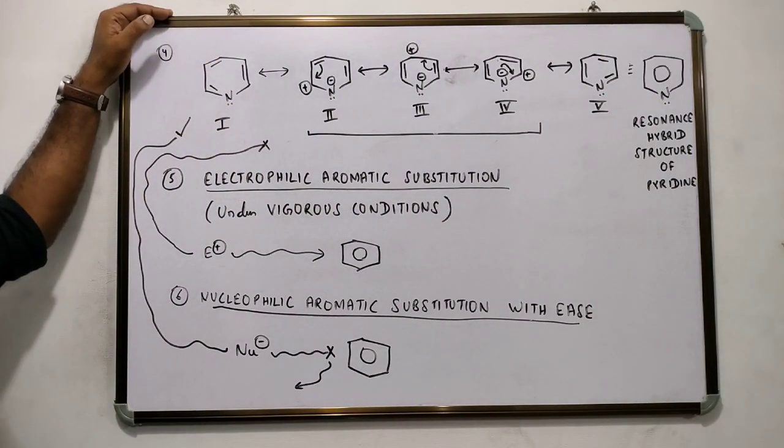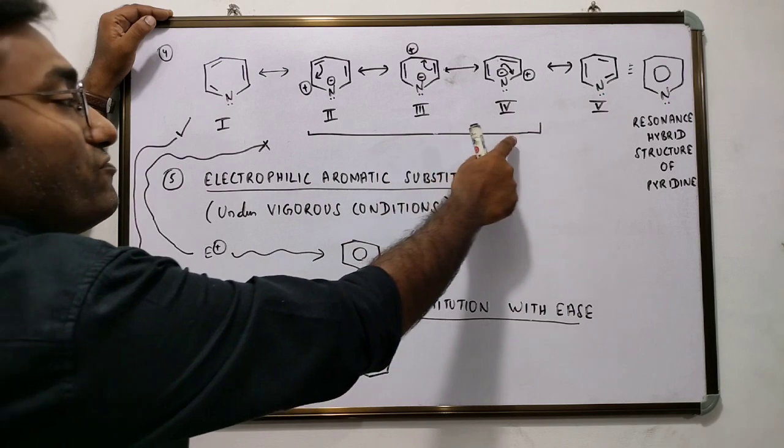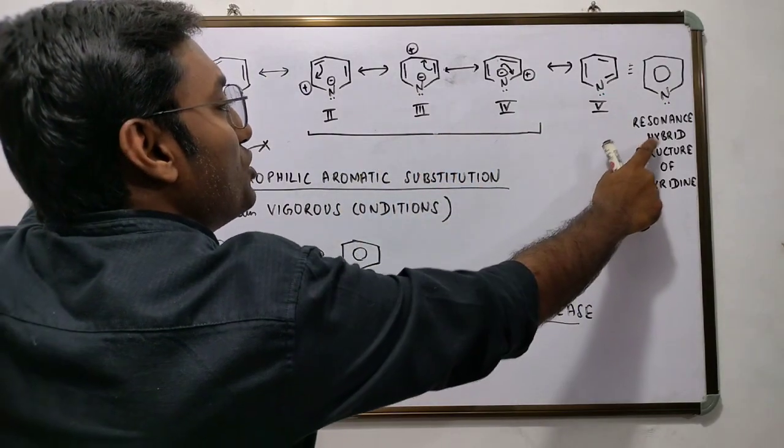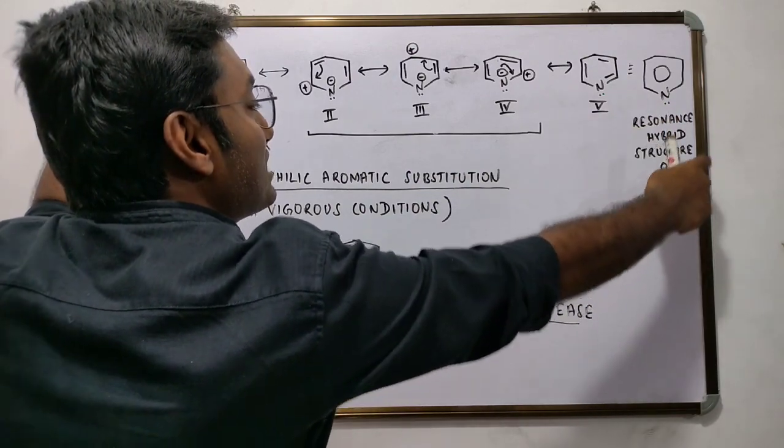While structure 2, 3, and 4, the ionic resonating forms, have a lesser contribution towards the resonance hybrid structure.